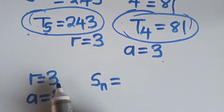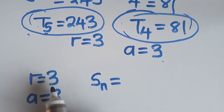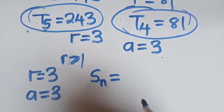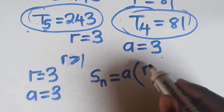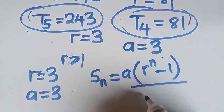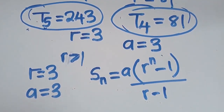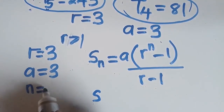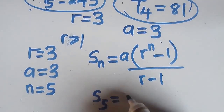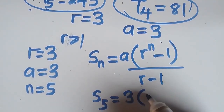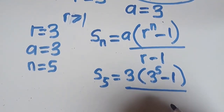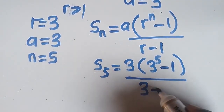The common ratio is 3, which is greater than 1. When the common ratio is greater than 1, the formula we use is S_n = A(R^n - 1) / (R - 1), to avoid a negative answer. So S5 = 3(3^5 - 1) / (3 - 1), which gives 3(3^5 - 1) over 2.